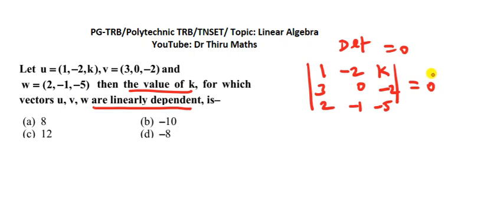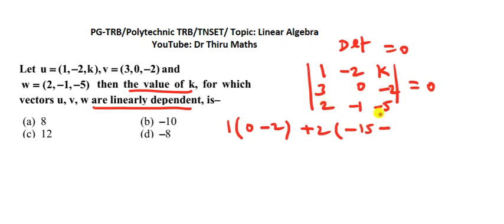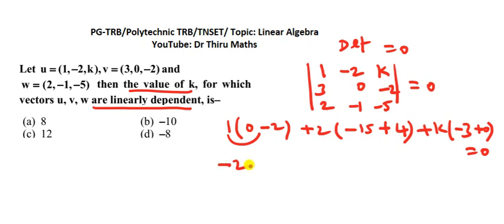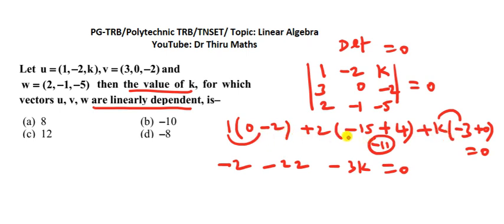Expanding along R1, we get the k value. 1 into 0 minus 2, then plus 2, then 3 into minus 5 minus 15, then minus 7. 2 into minus 2 minus 4, then plus 4k, then minus 3 into minus 1 minus 3, minus 2 into 0. 1 into minus 2 minus 2, minus 15, minus 15 plus 4 minus 11. 2 into minus 11 gives minus 22, then k into minus 3, so minus 3k equals 0. Expanding R1, R2, R3, C1, C2, C3 — this is one method.